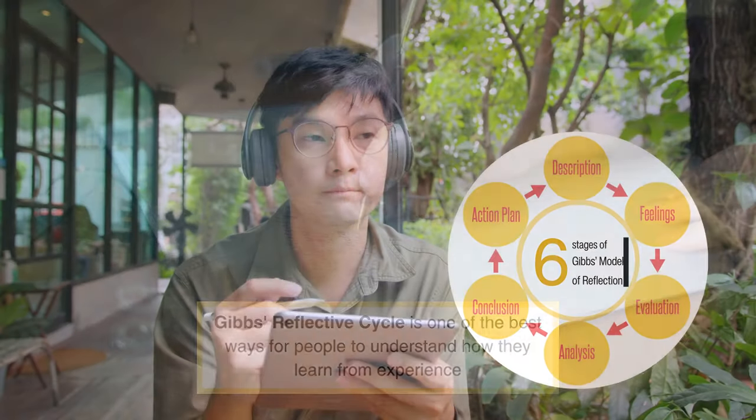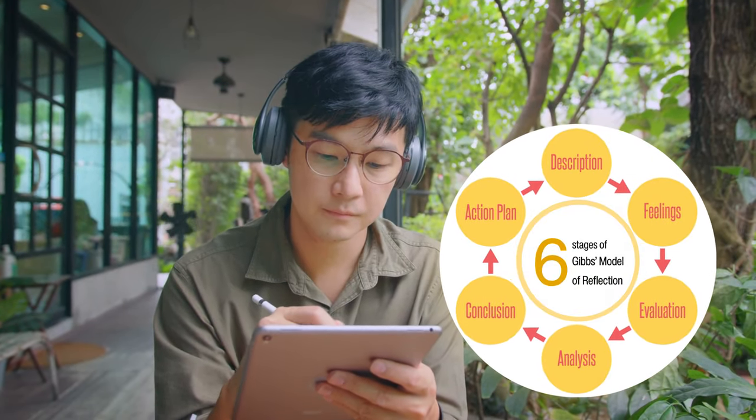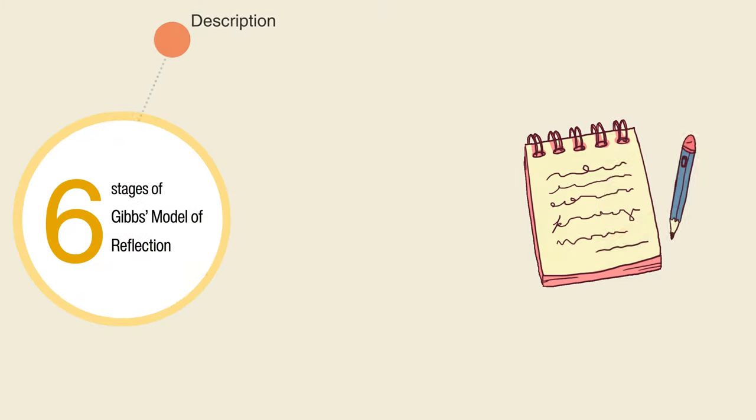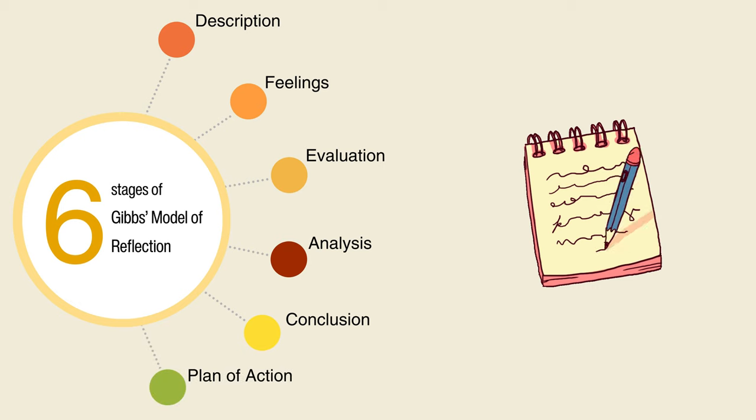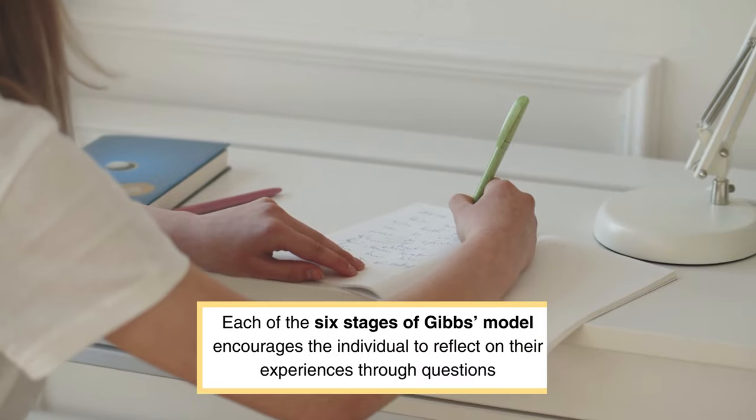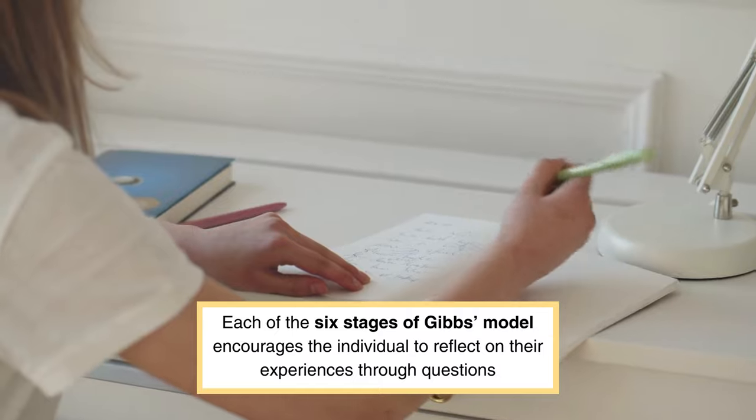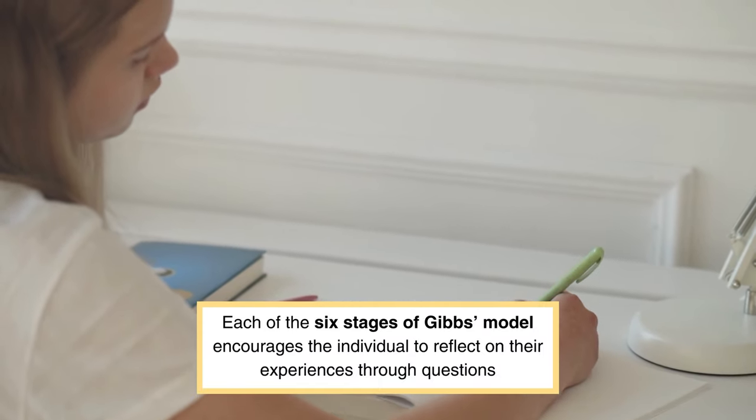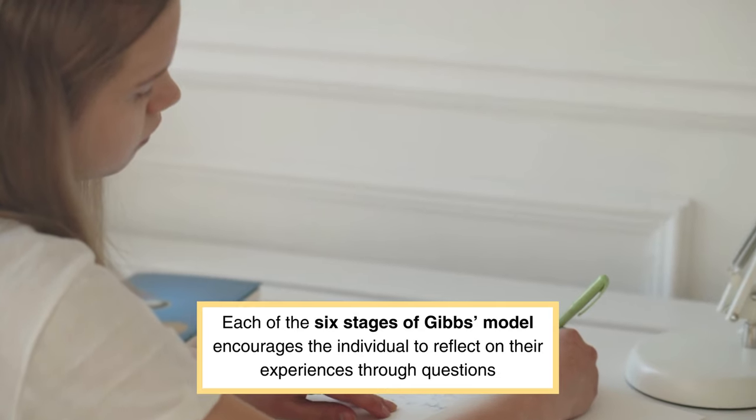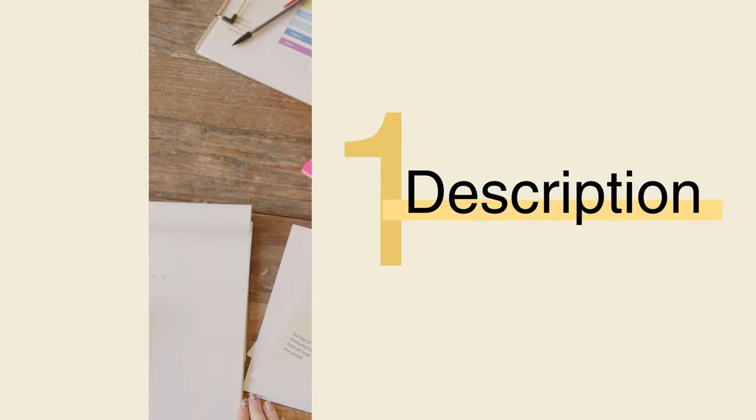Gibbs' Reflective Model is structured into the process of learning through six stages: Description, feelings, evaluation, analysis, conclusions, and plan of action. Each of the six stages of Gibbs' model encourages the individual to reflect on their experiences through questions. Let's break down each stage of Gibbs' Reflective Cycle and explore its impact on experiences.